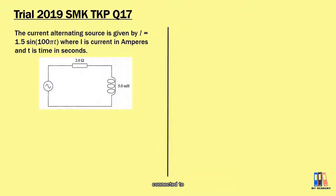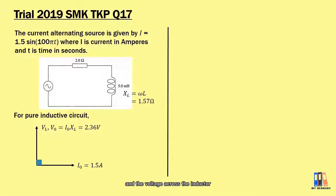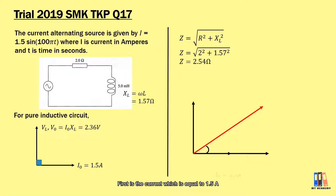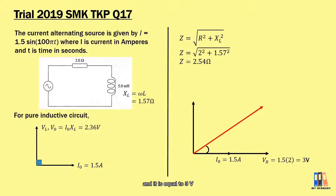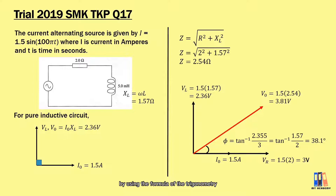For the RL example from TKP 2019, we are given an AC current connected to a resistor of 2 ohms and an inductor of 5 mH. The reactance XL = 1.57 ohms. For a pure inductive circuit without the 2-ohm resistor, the current is 1.5 amperes to the right and the voltage across the inductor leads by 90 degrees with a value of IXL = 2.36 V. For the full circuit, the impedance is 2.54 ohms. The phasor diagram shows the current at 1.5 A, the voltage across the resistor in phase at 3 V, the voltage across the inductor leading by 90 degrees at 2.36 V, and the applied voltage at 3.81 V. The applied voltage leads the current by 38.1 degrees.